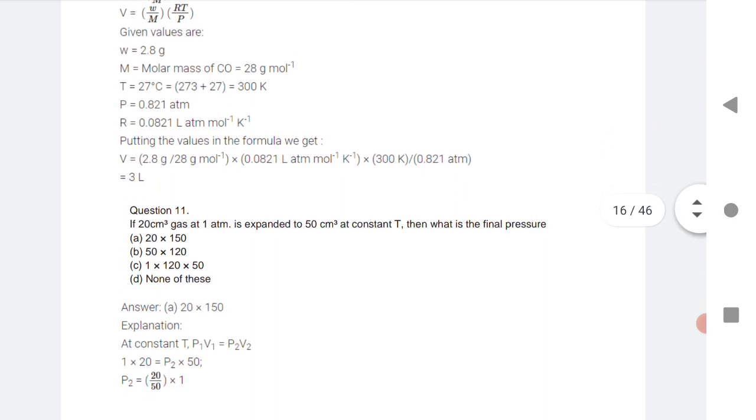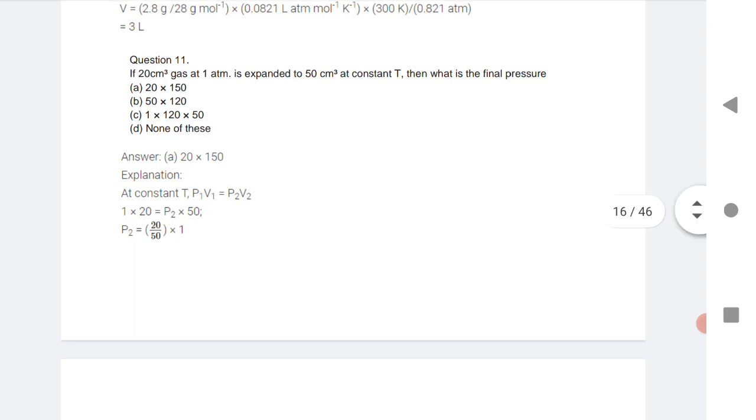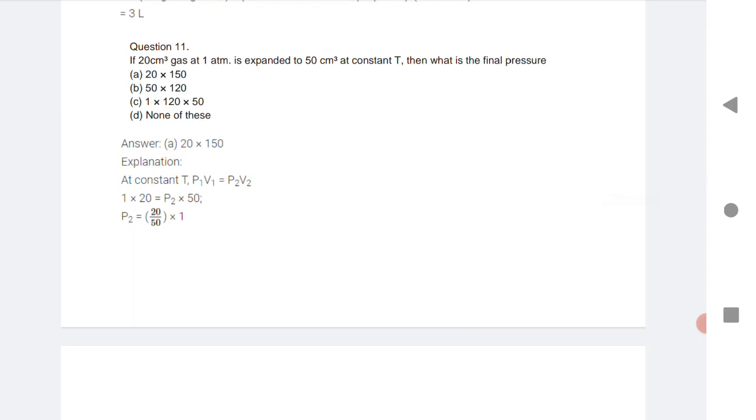Next is a simple question: If 20 cm³ gas at ATP is expanded to 50 cm³ at constant T, what is the final pressure? So you need to use the formula P1/V1 = P2/V2 because here one volume is given, another volume is given, and one pressure is given. Another final pressure you need to find out. Just substitute the value of P1, V1, and V2, you find out P2. Just substitute, you will get the answer.